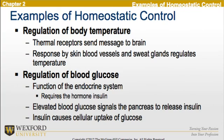Now, if we look at examples of homeostatic control, we can look at regulation of body temperature, where thermal receptors send messages to the brain and the response is by skin vessels and sweat glands regulating the temperature. Another example is regulation of blood glucose — a function of the endocrine system which requires the hormone insulin. Elevated blood glucose signals the pancreas to release insulin, whereby the insulin causes a cellular uptake of glucose. Both regulation of body temperature and blood glucose are examples of homeostatic control.